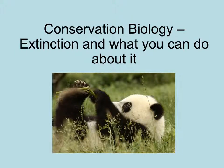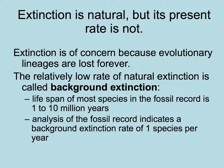These are the last words I'm going to record for this class, talking about extinction and what we can do about it. We all know that extinction is a natural process, but its present rate is not. It's of concern because we can lose evolutionary lineages and their genetic diversity forever. The relatively low rate of natural extinction that's always existed is called background extinction.